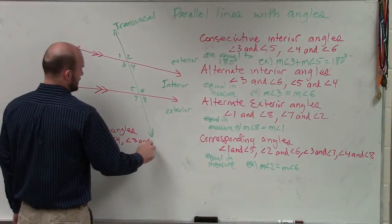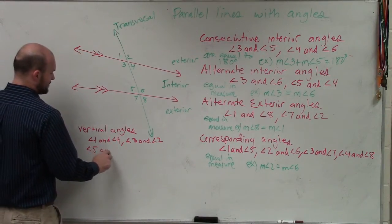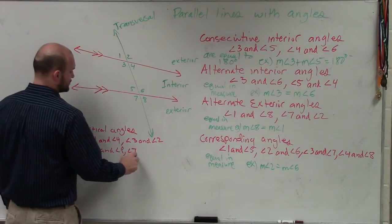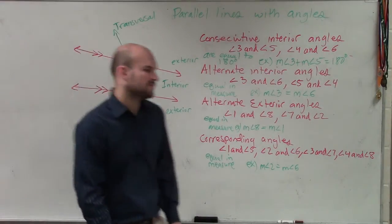Angle 3 and angle 2 are vertical angles. You could say angle 5 and angle 8 are vertical. And angle 7 and angle 6 are vertical angles. Those are all examples of vertical angles.